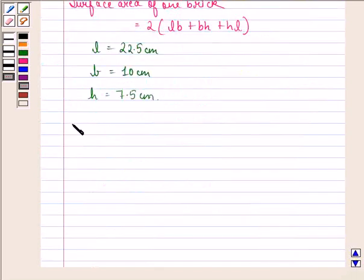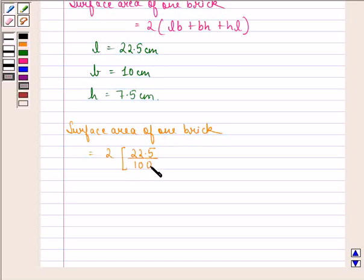So we have surface area of one brick becomes equal to twice of 22.5 divided by 100. Now we divide it by 100 because we are converting it to meters multiplied by 10 by 100 plus 10 by 100 into 7.5 divided by 100 plus 7.5 divided by 100 into 22.5 divided by 100 meter square.